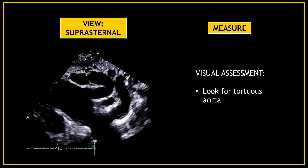And to finalize, it's very important to look at the aortic arch branches during the visual assessment, as you can encounter something like this — an example of a tortuous aorta.